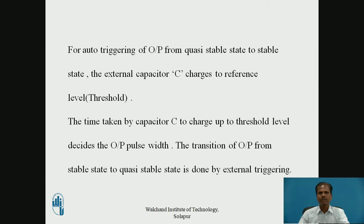For auto-triggering of the output signal from quasi-stable state to stable state — that is, from high state to low state — the external capacitor C charges to the reference level, i.e., threshold level. The time taken by capacitor C to charge up to threshold level decides the time duration of the output pulse width. The transition of output from stable state to quasi-stable state is done by an external triggering signal.